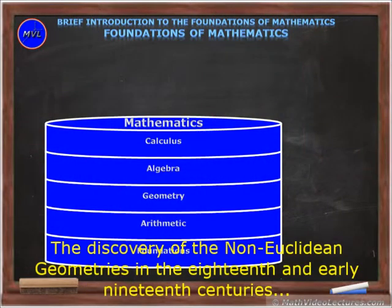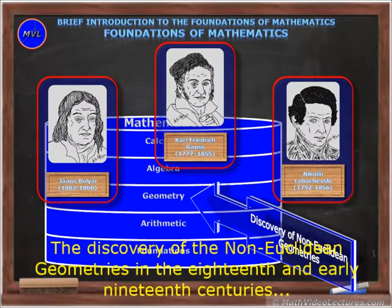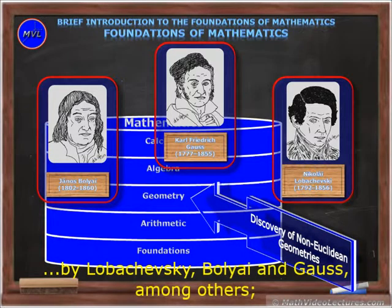the discovery of the non-Euclidean geometries in the 18th and early 19th centuries by Lobachevsky, Bolyai and Gauss, among others,